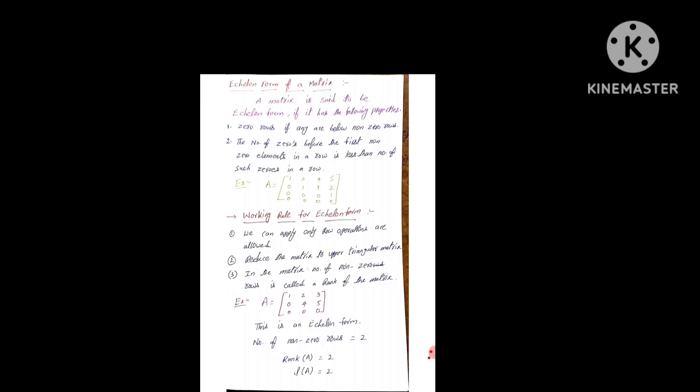Echelon Form of a matrix — we have to know first two definite points. A matrix is said to be in Echelon Form if it has the following properties. First property: zero rows, if any, are below non-zero rows. Second condition: the number of zeros before the first non-zero element in a row is less than the number of such zeros in the next row.